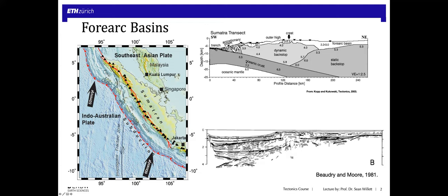If we look at the seismic data imaging the crustal structure of the forearc, we see that the active accretionary prism is actually limited to the immediate vicinity of the trench. We have accreted material further back in the system, sometimes deformed, sometimes not. But between this accreted material and what's really the basement going up to the volcanic arc is the forearc basin, filled with sediments. Looking at the internal structure, we can see the stratigraphic layering — mostly flat, nearly undeformed sediments that define this forearc basin.